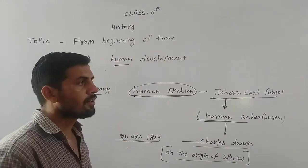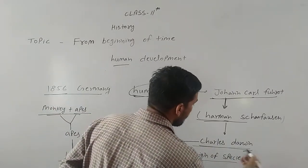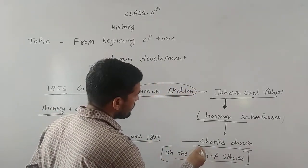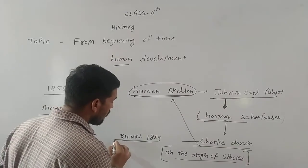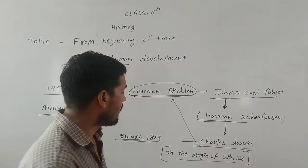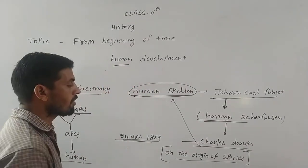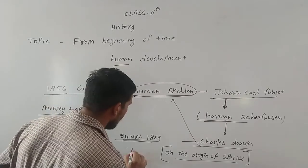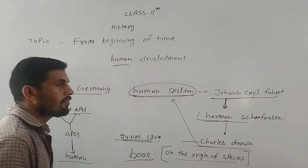Mr. Charles Darwin was interested in this subject, and in 1859 he launched a book called On the Origin of Species. In this book he told us about the story of human beings and their development.